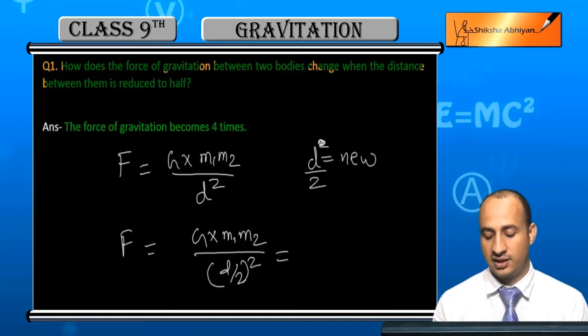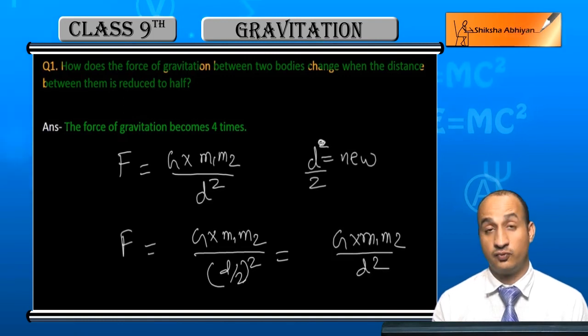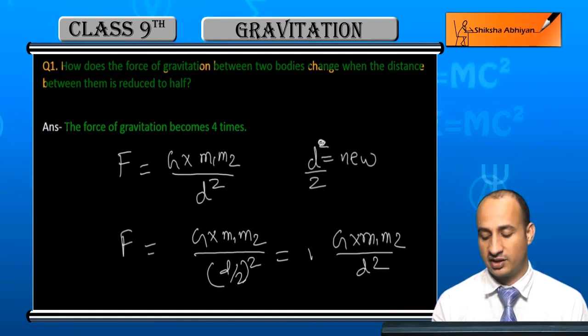And this will be G times M1 and M2 by D squared, and 2 squared is 1 by 4, which will be four times.